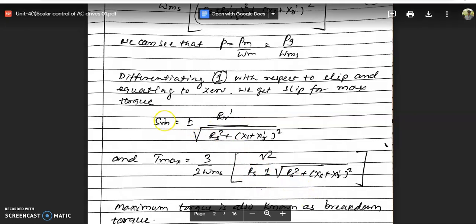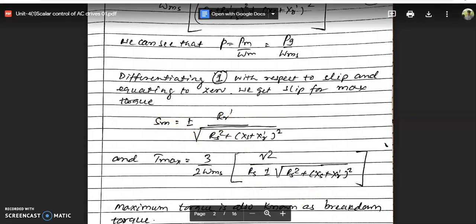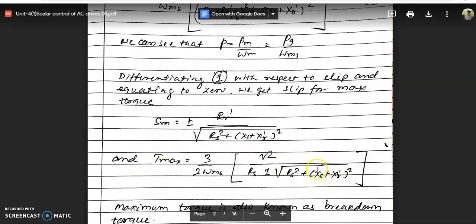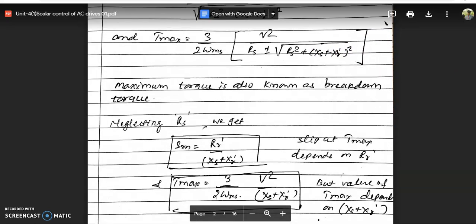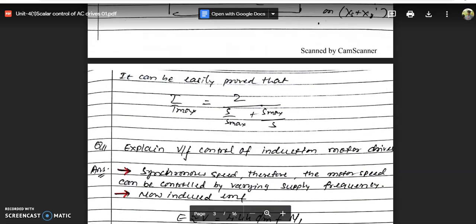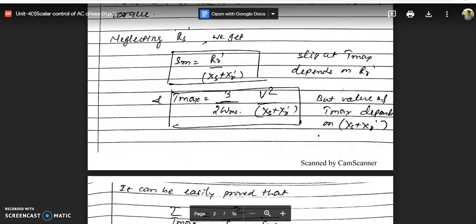The value of maximum torque does not depend on rotor resistance, but the value of slip at which it occurs depends on rotor resistance. Maximum torque, or pullout torque or breakdown torque, is proportional to voltage squared and inversely proportional to reactance. This was the torque equation of induction motor drive.